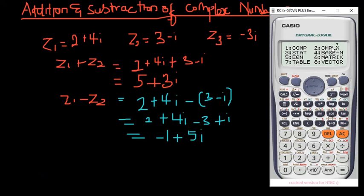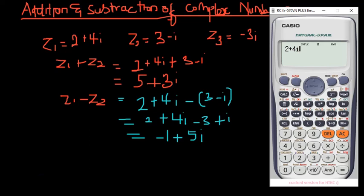Click Mode to switch to complex mode, then click two. Right now you are in complex mode. You just start calculating. So you have two plus four i, and then you add that to three minus i, and there you have your answer. It's as simple as that.